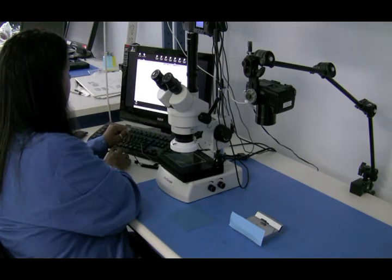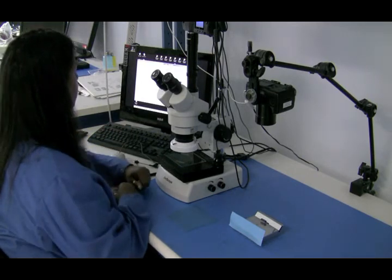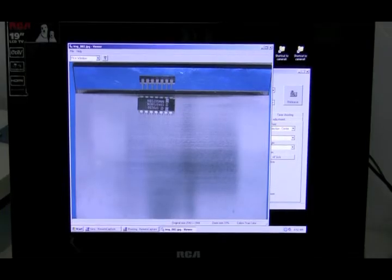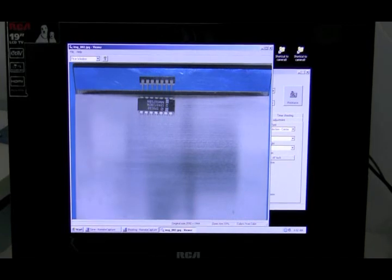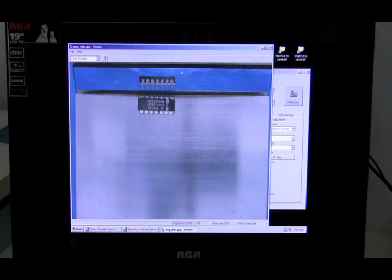With the coplanarity mirror the image is reflected showing that the leads are either straight or touching on the stage or the flat plane that the unit is sitting on. After taking the photo you can view your image to make sure that the unit is considered coplanar or not.